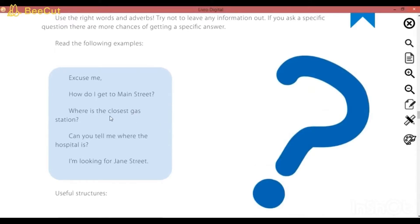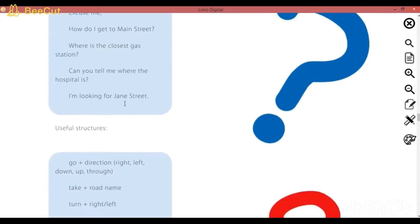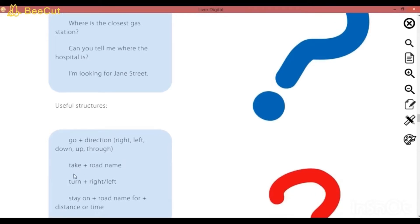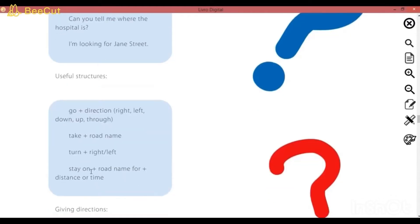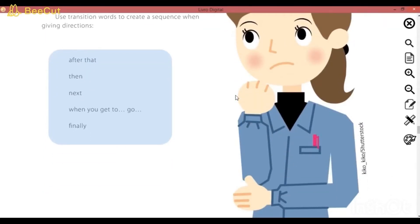How do I get? Where is the gas station, por exemplo? Can you tell me? Você pode me falar. I'm looking for, eu estou procurando. Então, você pode utilizar essas expressões para perguntar. Para responder, vocês vão usar go, take, turn. Go para ir. Take para você pegar. Turn para você virar. Stay on para você ficar ou permanecer em algum lugar. Então, nós vamos utilizar esse vocabulário que nós aprendemos na página 82.